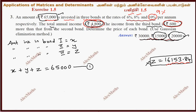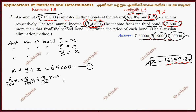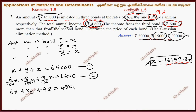The total annual income — this is the percentage — 6 by 100 of x plus 8 by 100 of y plus 9 by 100 of z. That is the percentage amount of investment. 4800 is equal to 8 by 100 of y plus 9 by 100 of z. This is the second equation.